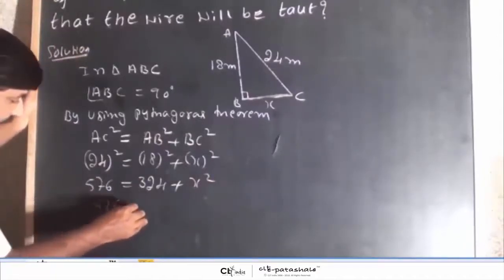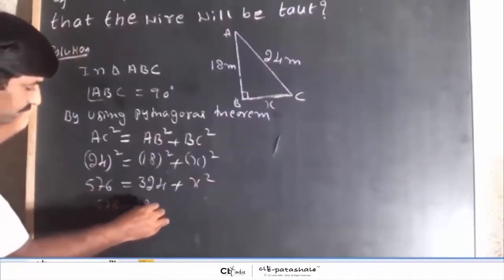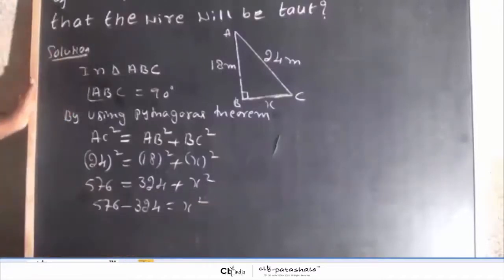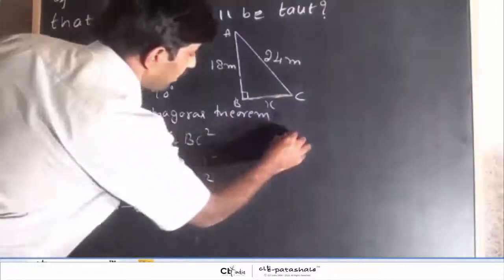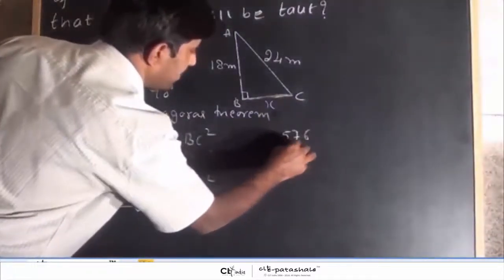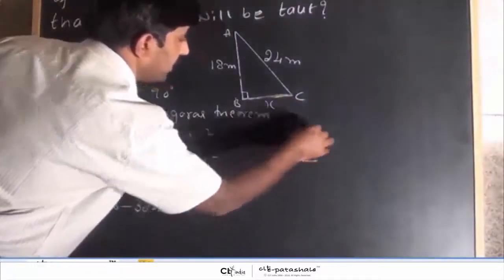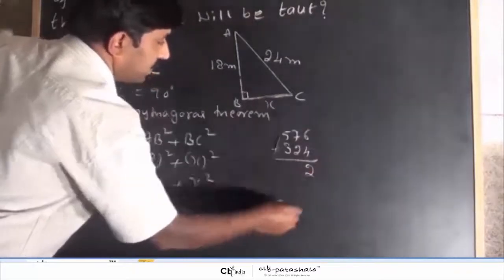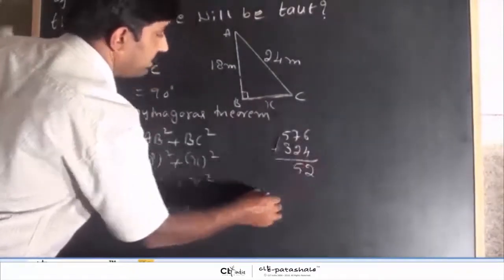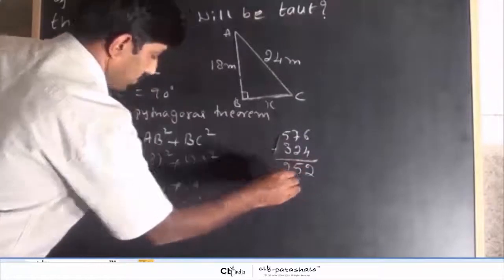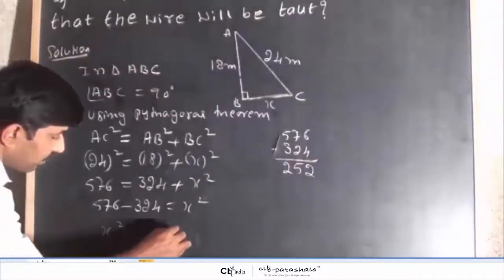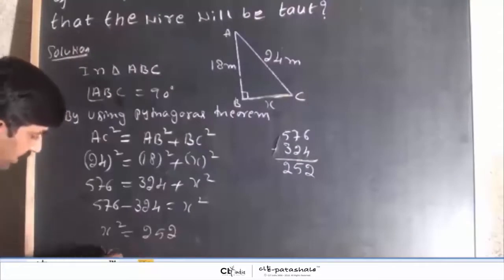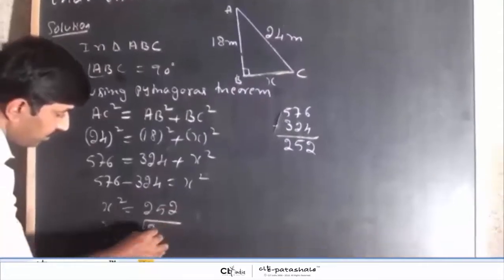576 minus 324 is equal to x square. 576 minus 324, 6 minus 4 is 2, 7 minus 2 is 5, 5 minus 3 is 2. So x square is equal to 252, x is equal to root of 252.